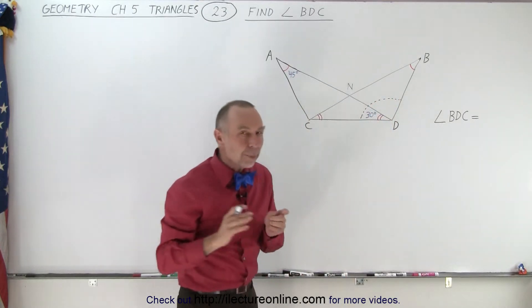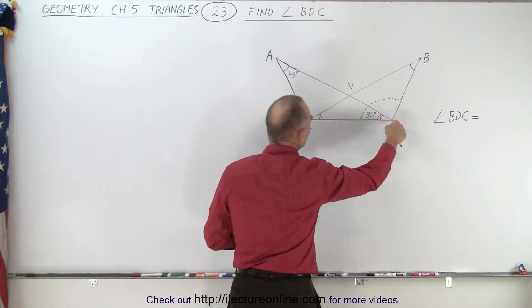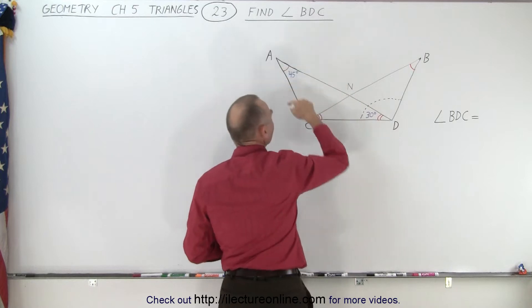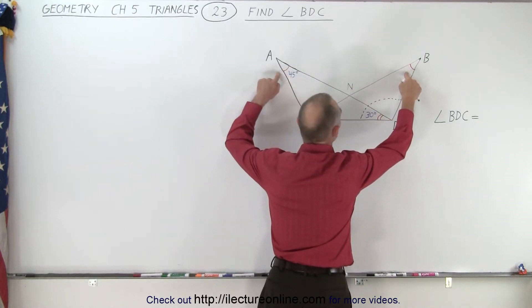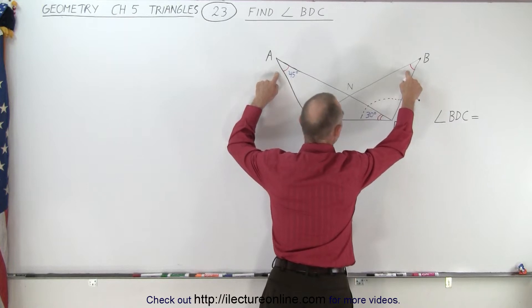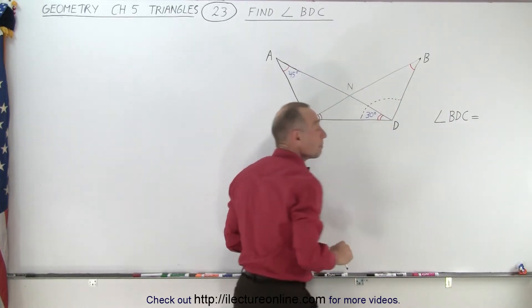And so they give us some partial information. First of all we have two triangles, one that's like this and the other one which is like this. And they do tell us that these are two corresponding angles that have the same measure. And these two angles are corresponding angles that have the same measure.